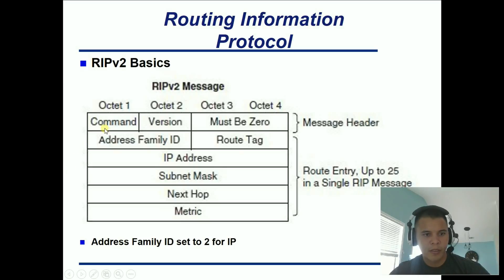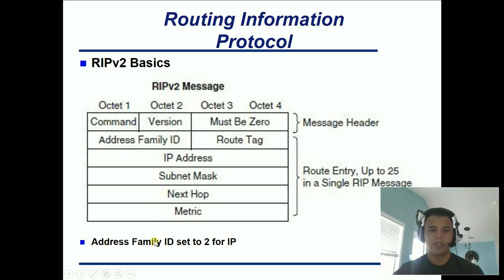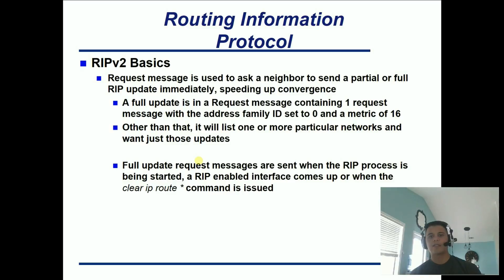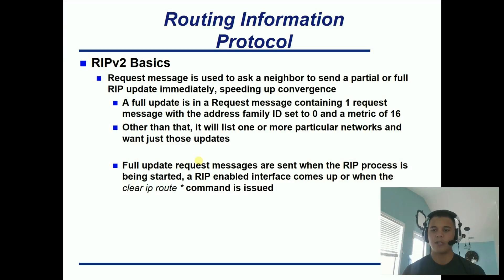In the command section you can see whether this is going to be a request or a response, and what version is running. Octets 3 and 4 of the header are all zeros, so they are not used. The address family ID — if you're routing for IP, it's going to be set to 2. There's the route tag and then up to 25 routes in a single RIP message, so if you have more than 25 routes you have to send multiple updates. A request message is used to ask a neighbor to send a partial or full update immediately, which helps speed up convergence. If I request a full update, I set the address family to 0 and the metric to 16. Also, if you do a clear IP route star to flush your routing table, that is basically telling RIP to ask for a full update.